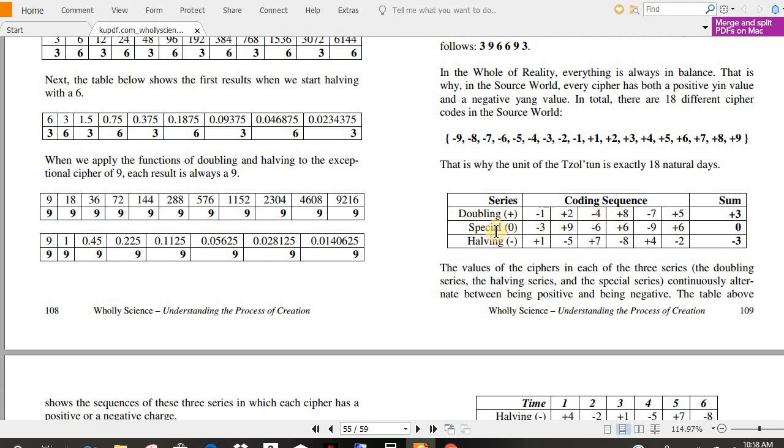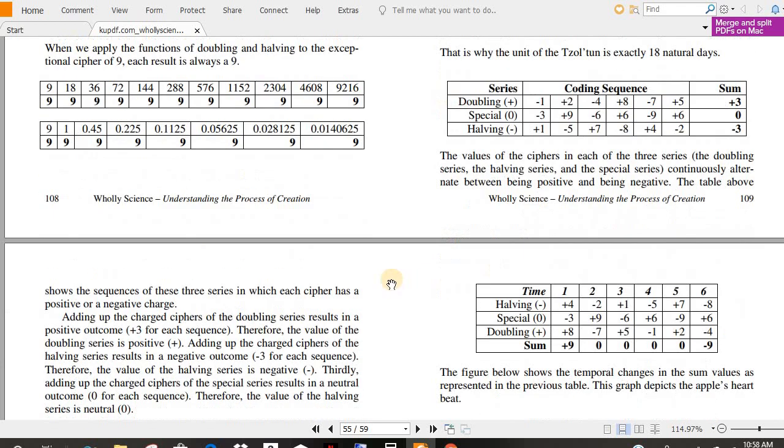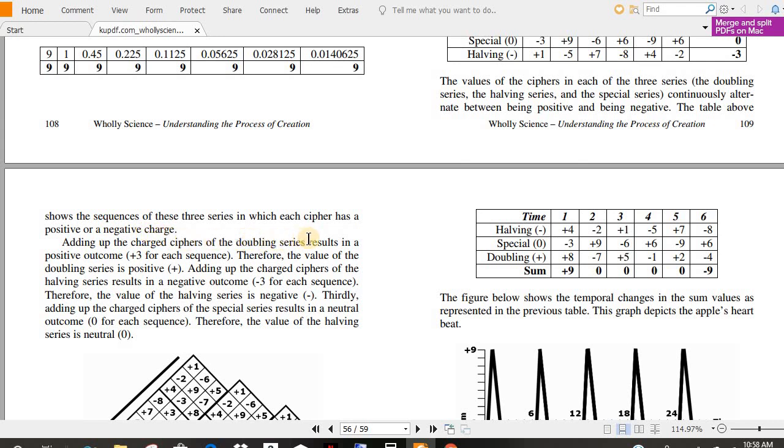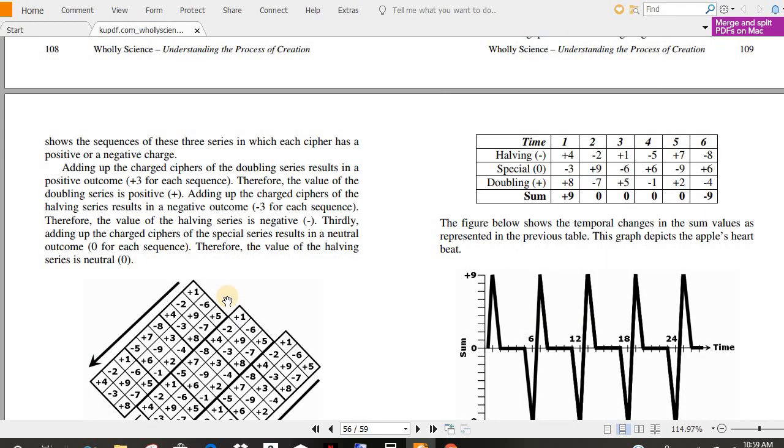Here's the chart for that. Doubling, special, then halving. The values of the ciphers in each of the 3 series, the doubling series, the halving series, and the special series, continuously alternate between being positive and being negative. The table above shows the sequences of these 3 series in which each cipher has a positive or negative charge. Adding up the charged ciphers of the doubling series results in a positive outcome, positive 3 for each sequence. Therefore, the value of the doubling series is positive. Adding up the charged ciphers for the halving series results in a negative outcome. Therefore, the value of the halving series is negative. Thirdly, adding up the charged ciphers of the special series results in a neutral outcome. Therefore, the value of the halving series is neutral. That is just amazing.